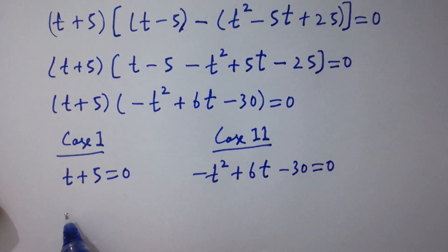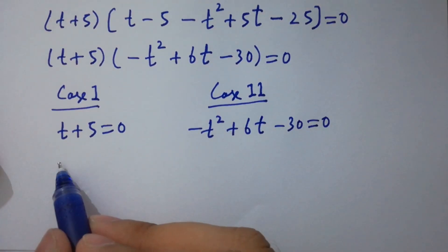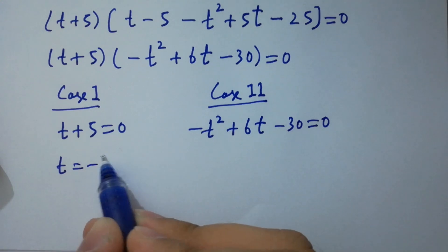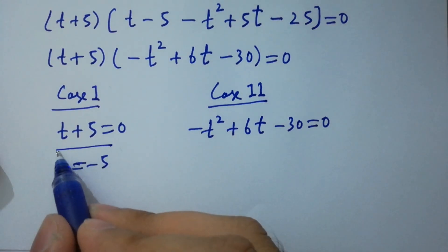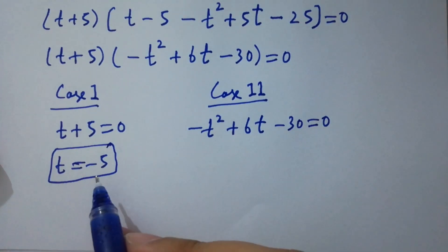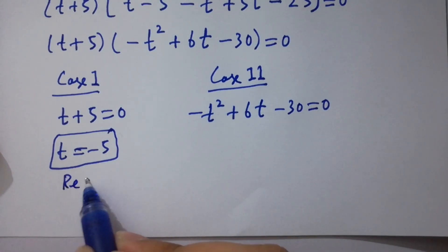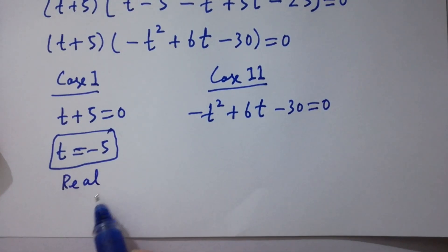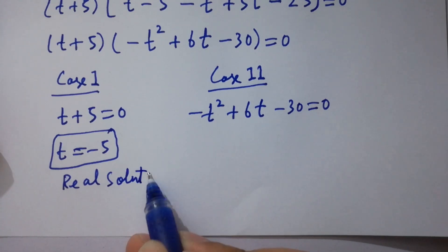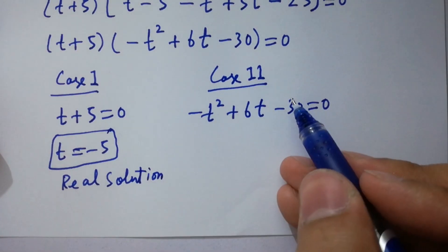From Case 1 we have t equals minus 5, which is our first real solution.